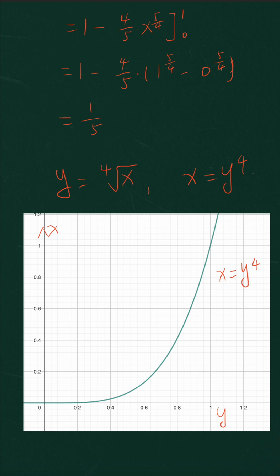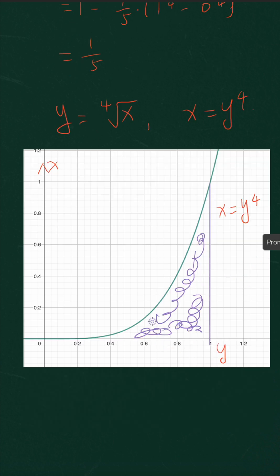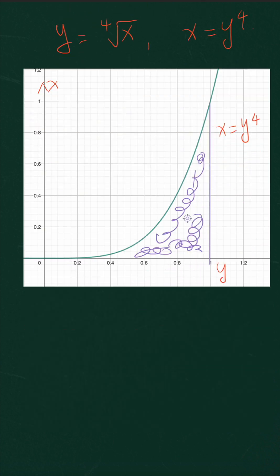And then the area we're finding is here, this purple area. We're going to consider this purple area as the definite integral of the function y raised to the power of 4 from 0 to 1 with respect to the variable y, not x anymore.